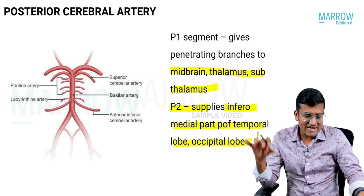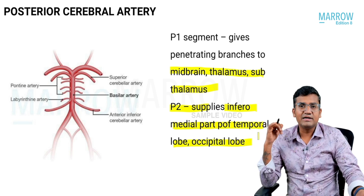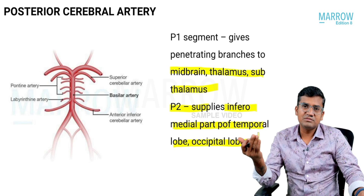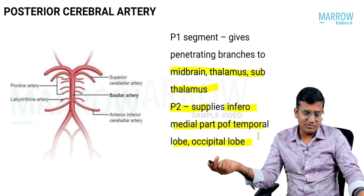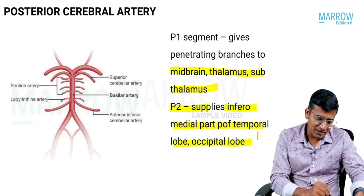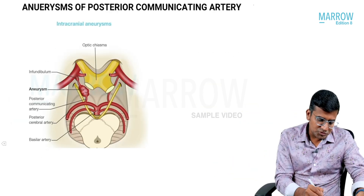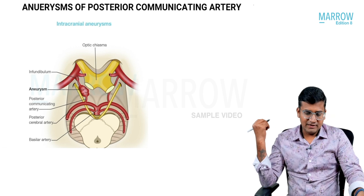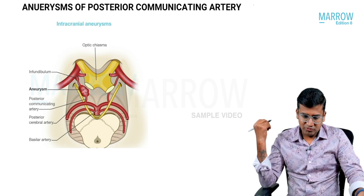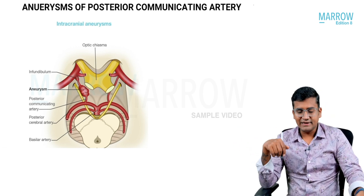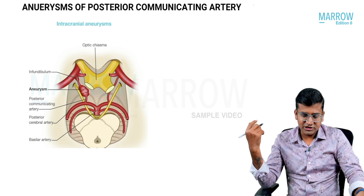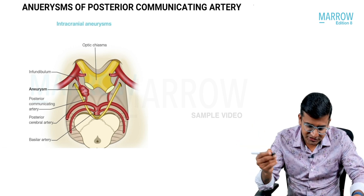So those are the areas supplied by the anterior cerebral, middle cerebral, and posterior cerebral arteries. Now for an important applied topic: aneurysms of the anterior and posterior communicating arteries.